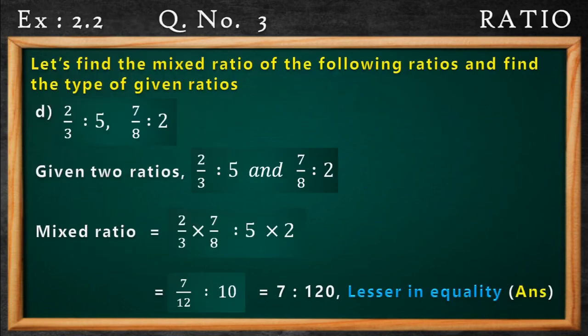This is question number 3. Let's find the mixed ratio of the following ratios and find the type of given ratios. So here we have to mix the ratio — that means we have to combine two or three ratios that are given and make a single ratio.